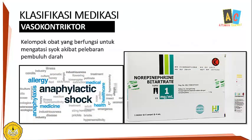Ada juga vasokonstriktor, artinya mengatasi vasodilatasi yang berlebihan. Salah satu kasusnya yang paling berbahaya pada vasodilatasi pembuluh darah berlebihan adalah syok anafilaktik, adanya gangguan peredaran darah akibat pelebaran pembuluh darah. Penanganan pokoknya adalah bagaimana meningkatkan tekanan darah, karena penyebabnya adalah pelebaran, maka cara menangani yang paling tepat adalah menyempitkan kembali pembuluh darah. Dibutuhkan obat-obatan vasokonstriktor, contohnya adalah Norepinefrin.